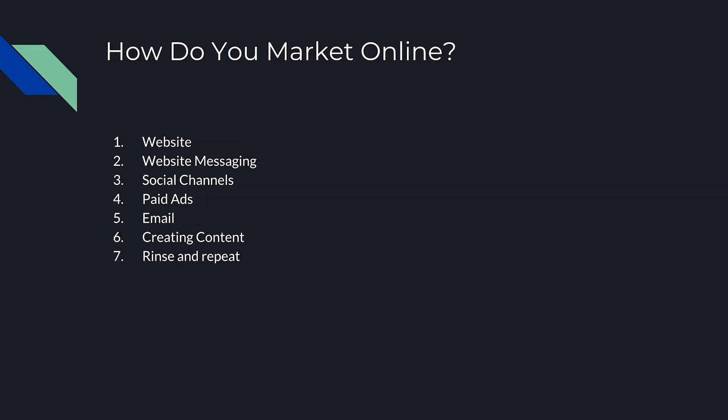So how do you do online marketing? There are seven steps I recommend. First, you have to have a killer website. Next, a website with great messaging. You have to have your social media channels built out. You need paid ads running, an email drip sequence in place, and you need to be creating content. And after all that, you have to rinse and repeat.